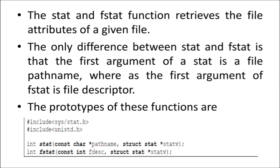The only difference between STAT and FSTAT is that the first argument of STAT is a pathname of a file, while the first argument of FSTAT is a file descriptor. To know the attributes, you need a way to locate the file. In the STAT function, you find the file using the pathname; in the FSTAT function, you find the file using the file descriptor.